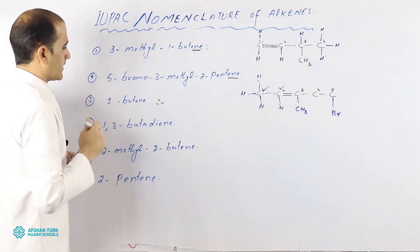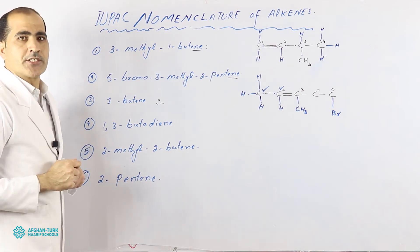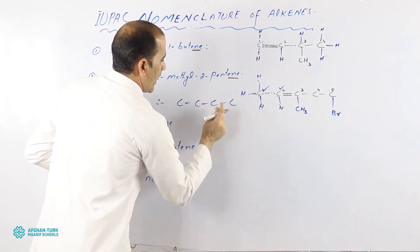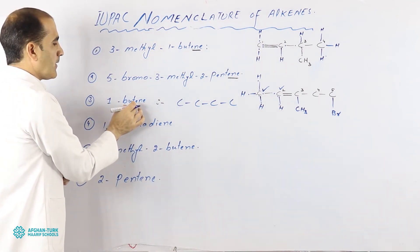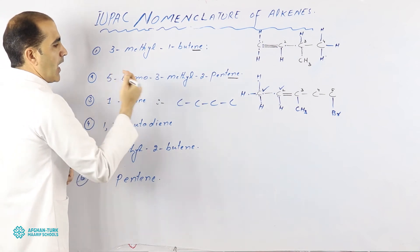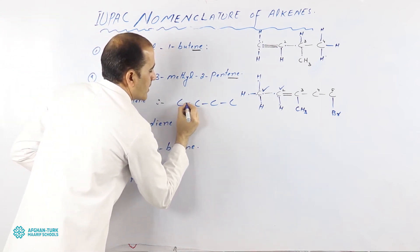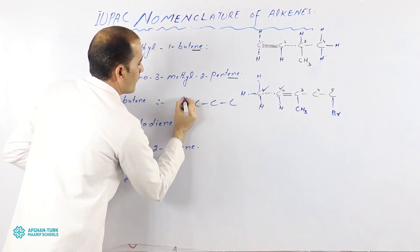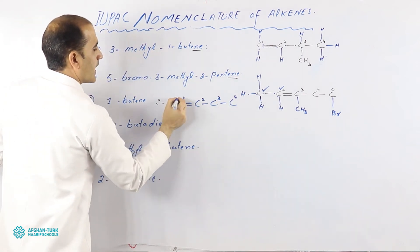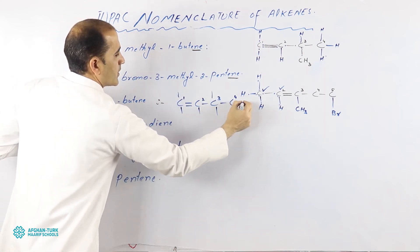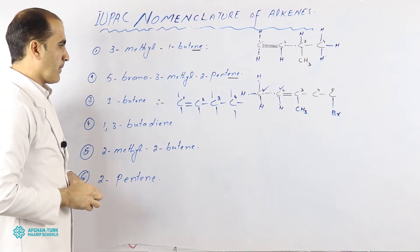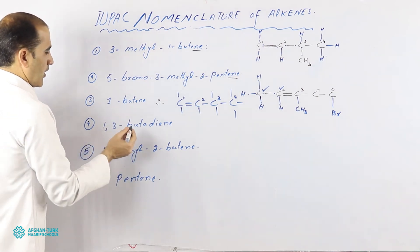The third example is a very simple one: 1-butene. Draw four carbon atoms — one, two, three, four — because 'but' means four. 'Ene' means there must be a double bond; it belongs to the alkene family. On the first carbon there is a double bond. You can then attach hydrogen atoms by counting the number of electrons to find out how many hydrogens each carbon atom needs.